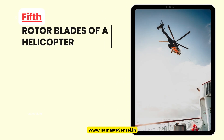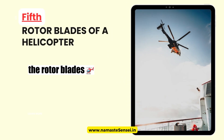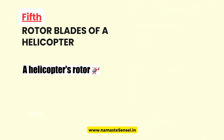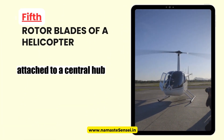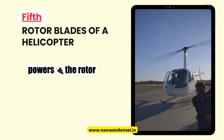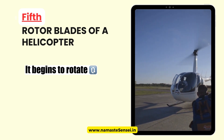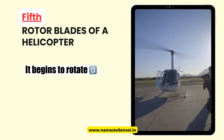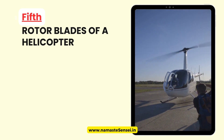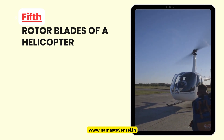Fifth, Rotor Blades of a Helicopter. When a helicopter is in flight, the rotor blades exhibit uniform circular motion. A helicopter's rotor consists of multiple blades attached to a central hub. As the engine powers the rotor, it begins to rotate, causing the blades to move in a circular path. That is all for this video.